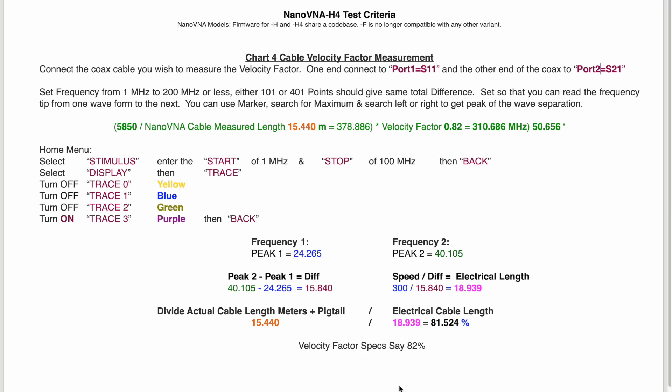The first thing you need to do is connect one end of your coax to Port 1 S11 and the other end to Port 2 S21. We're going to set a frequency start of 1 megahertz and a stop at 200 megahertz.